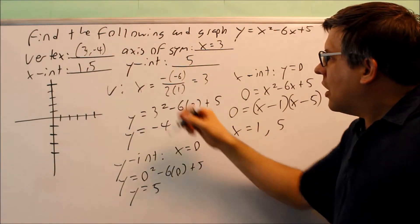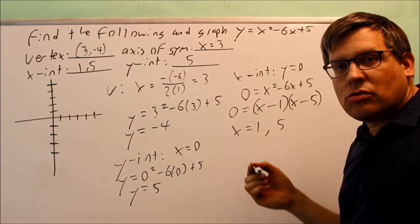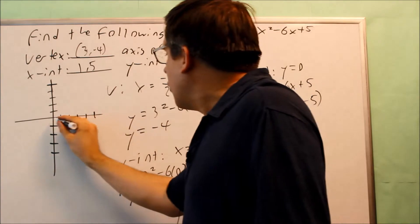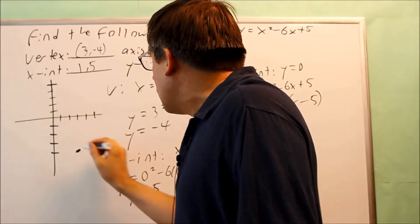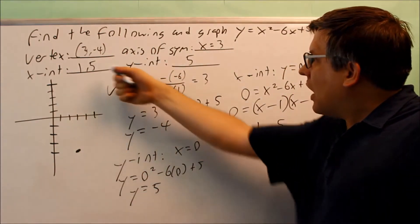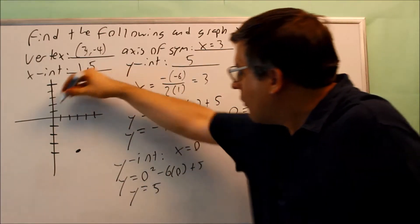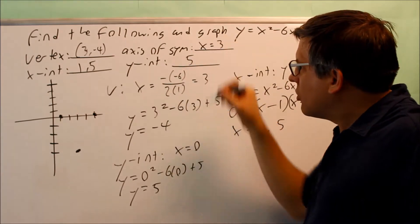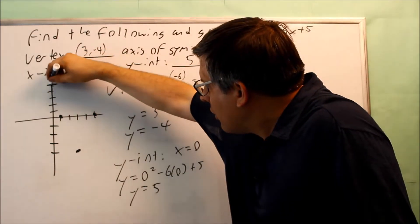I've found all the information, and I'm going to use this information now to graph. So the first thing is I'm going to plot 3, negative 4. So over 3 and down 4 would be right there. Next, I have x-intercepts 1 and 5, 1 here and a 5 there. And then also my y-intercept is going to be 5 as well.